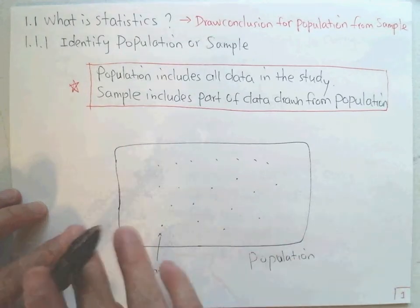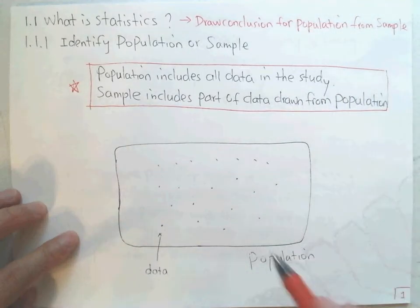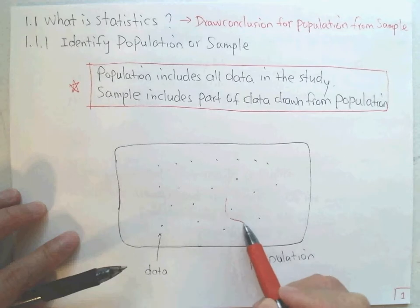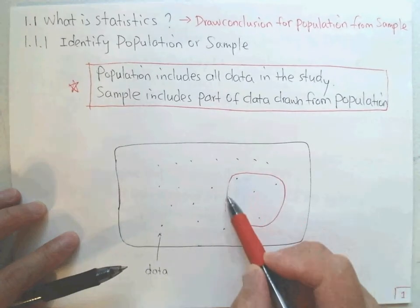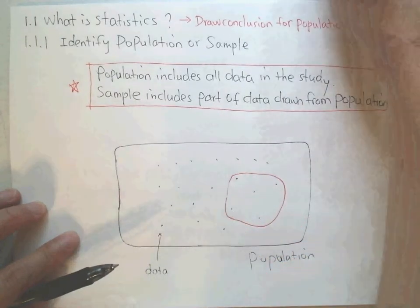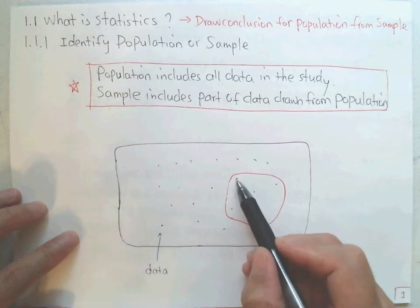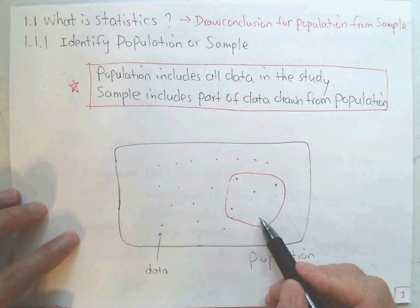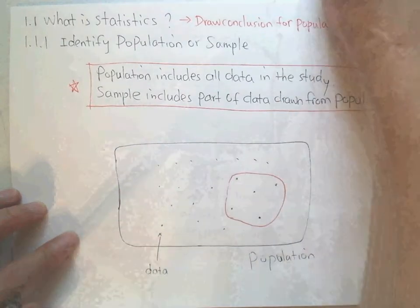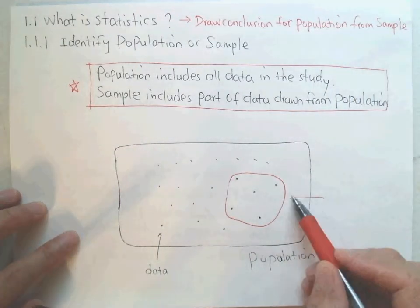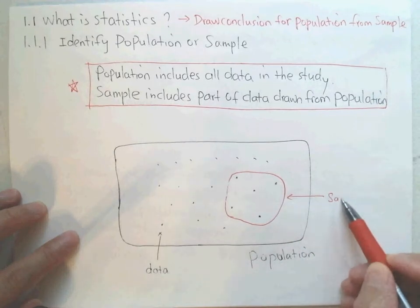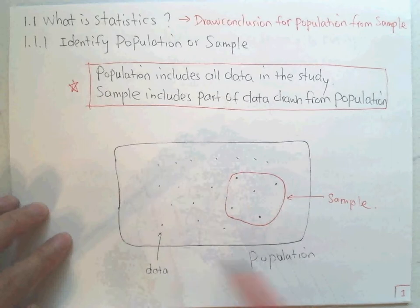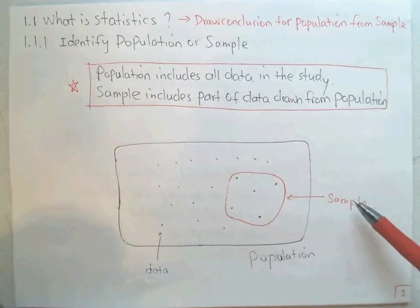So what is a sample? A sample is a random draw. Whatever I draw in this — look at how many data points I get. One data, two data, three data, four data, five data. And these five data points we call the sample. So population includes all the data. What is a sample? A sample includes a small part of the data.